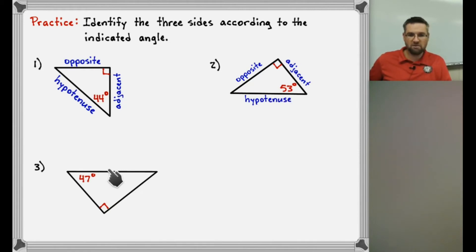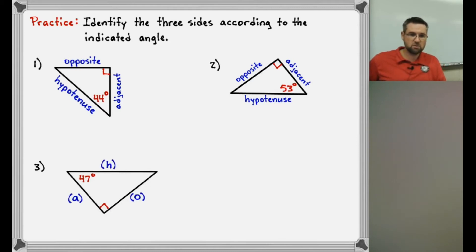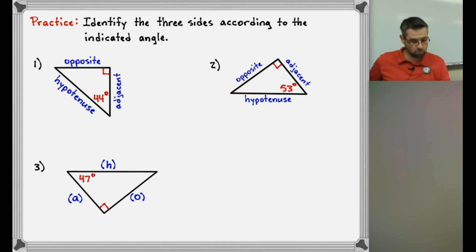For the last one, the easiest to identify is the hypotenuse — that's across from the 90. The adjacent is the one touching both the 47 degrees and the 90 degrees. And the opposite side is the one that's not touching the indicated angle in any way. So there's my opposite, adjacent, and hypotenuse. I just use the first letter of those words to simplify it. So if you can identify the opposite, the adjacent, and the hypotenuse, you're good so far — that's one of the two things you need for trigonometry.